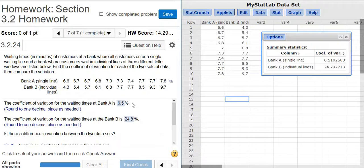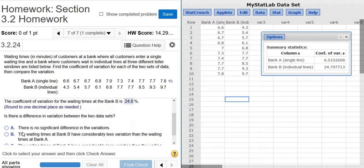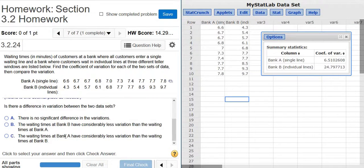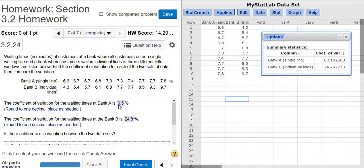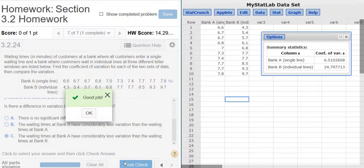As a general rule, a difference of more than 5% is significant. The waiting times at bank A have considerably less variation than bank B, since A is 6.5% and B is 24.8%. Bank A has a single line and bank B has individual lines, so that makes sense. That's it.